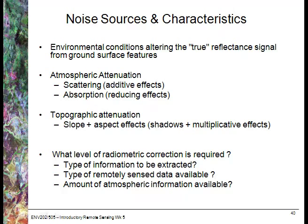What we want to do is remove any environmental conditions that alter our true reflectance signal, and extract just the reflectance off the ground features. This may involve removing atmospheric attenuation — either scattering, which adds radiance to our pixels, or absorption, which reduces the radiance received. We might also remove topographic attenuation, considering slope and aspect effects. It's important to understand what level of radiometric correction is required, which depends on the type of information needed and the remotely sensed data and atmospheric information available.